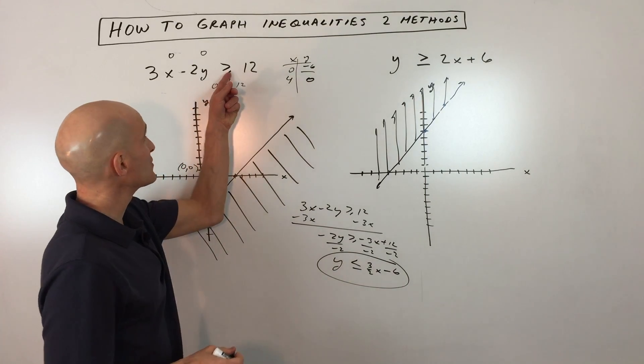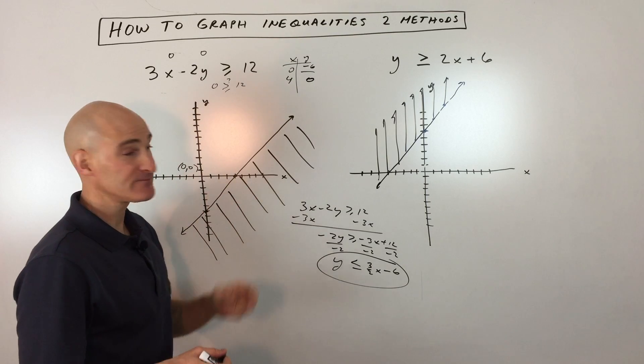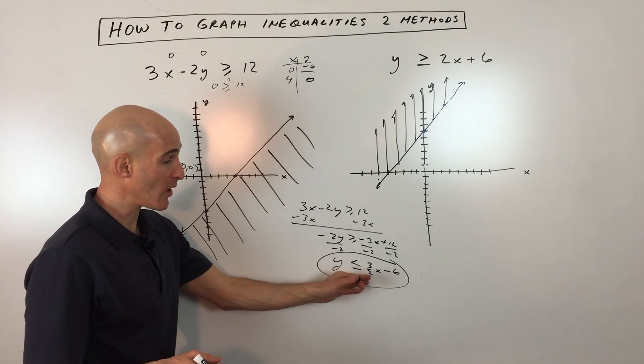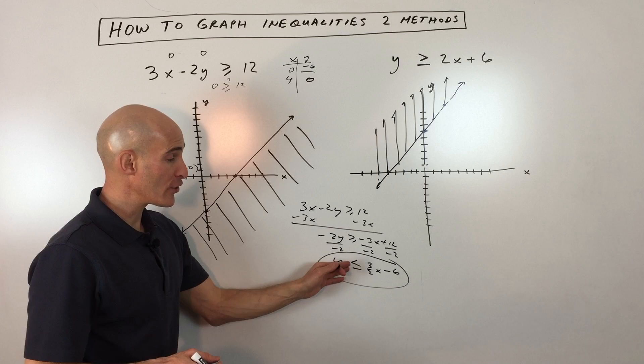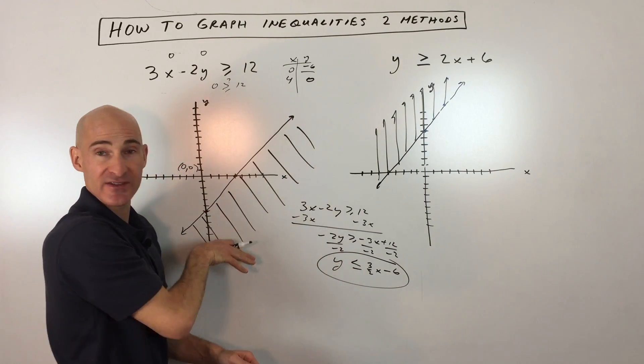Now, at first glance, you might see this greater than or equal to and say, well, Mario, how come I'm not shading above this line, right? Well, you can see here when you get the y by itself, well, the y values are less than, right, less than or equal to the points on this line.